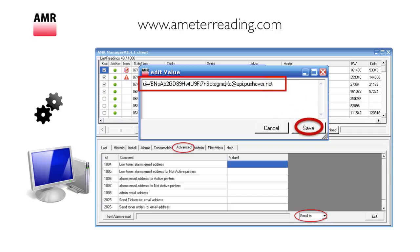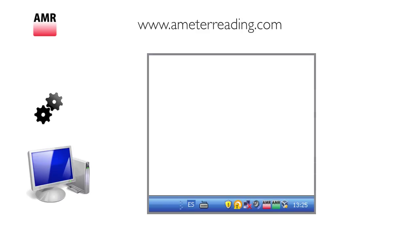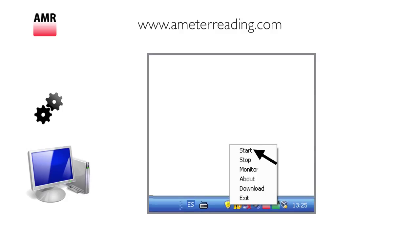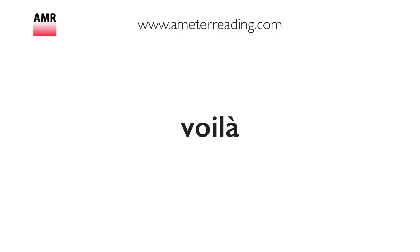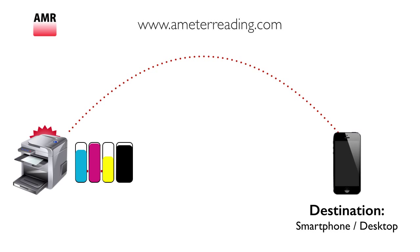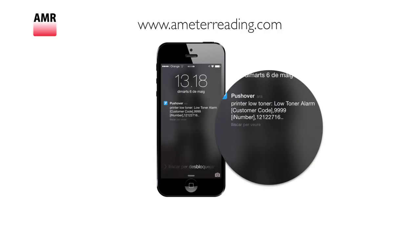Save it. There's only one step left: you have to stop the service and start it again to make sure it works. And voila! You have a monitor on your printer. When the toner goes down, you get a push notification on your cell phone — it looks something like this.